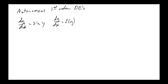The next one is not autonomous: series circuits with L·d²q/dt² plus R·dq/dt plus (1/C)q equals E(t). There the t is explicitly part of the equation — so that's one out of all these that is not autonomous.